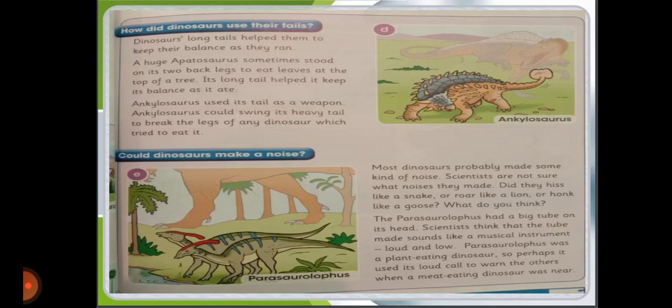Could dinosaurs make a noise? Most dinosaurs probably made some kind of noise, though scientists are not sure what noises they made. Did they hiss like a snake, roar like a lion, or honk like a goose? Parasaurolophus had a big tube on its head, and scientists think that tube made sound like a musical instrument — loud and low. Parasaurolophus was a plant-eating dinosaur, so perhaps it used its loud call to warn others when a meat-eating dinosaur was near.